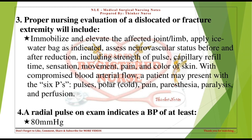With compromised blood arterial flow, a patient may present with the 6 Ps: pulses, polar (cold), pain, paresthesia, paralysis, and perfusion. A radial pulse on exam indicates a BP of at least 80 mmHg.